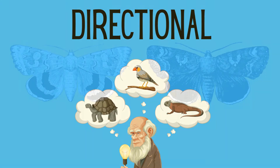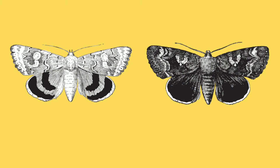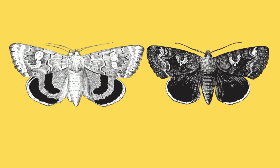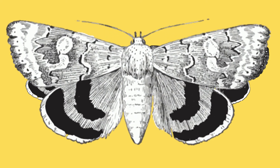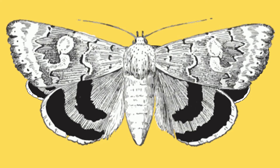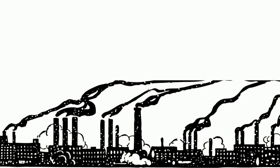A classic example is the pepper moth during the Industrial Revolution. In the mid-1800s, most pepper moths were white, and black pepper moths were rare to see. As the Industrial Revolution moved forward, factories were fueled by coal, and many of the trees became dark.